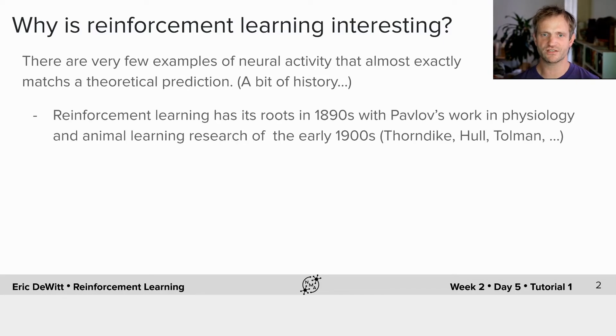Reinforcement learning has its roots in the 1890s with Pavlov's work in physiology and the animal learning research of the 1900s. In the 1920s, 30s, and 40s this work continued to grow, and in the 50s and 60s and 70s there was work done to formalize it and additional contributions from statistical learning theory and operations research. As Doina said this morning in the introductory lecture, reinforcement learning is the intersection of many fields.